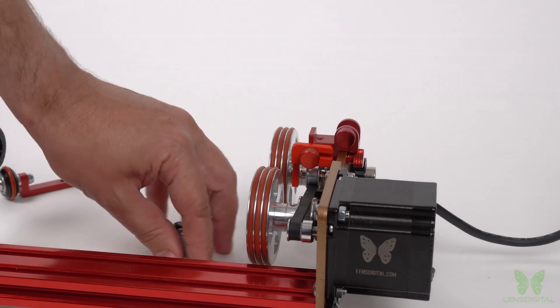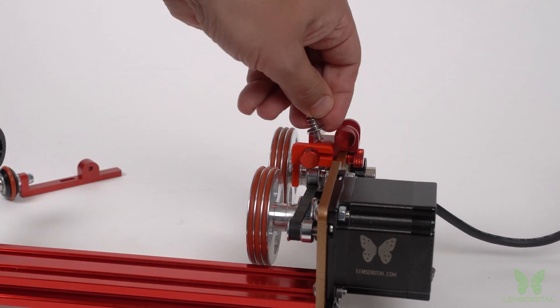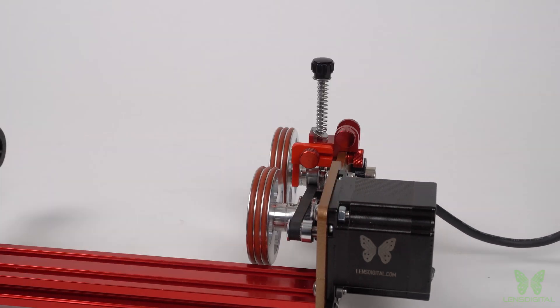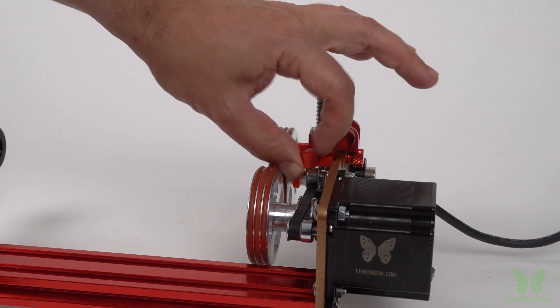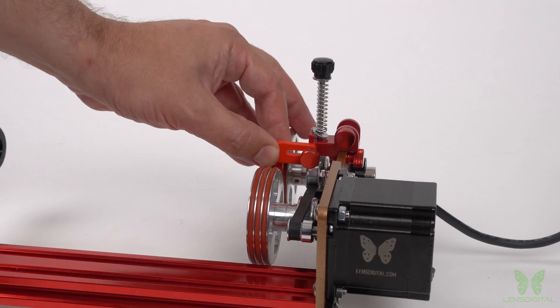You can temporarily install both the thumb screws into the clamp base without the clamp arm, so you don't lose them later. As you can see, you're still able to adjust the front end stopper with the arm removed.